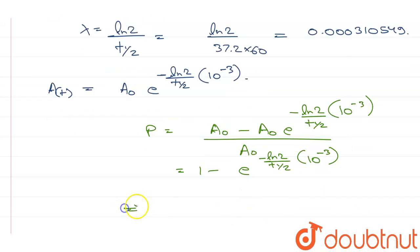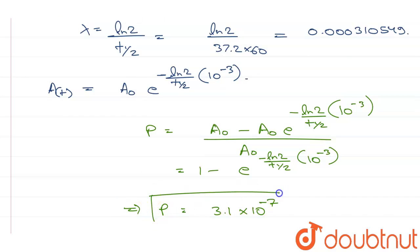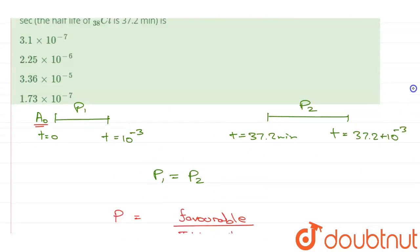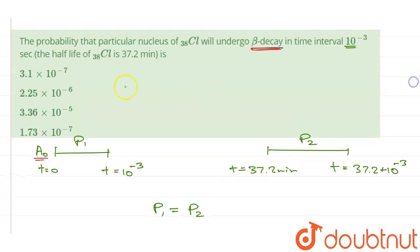This gives us the probability P equal to 3.1 × 10⁻⁷. So the probability of beta decay is 3.1 × 10⁻⁷.